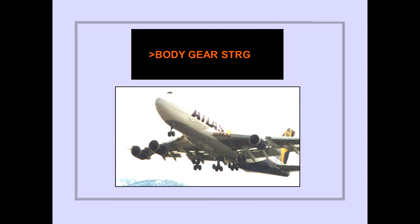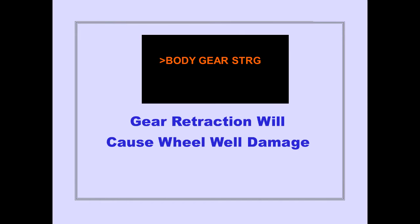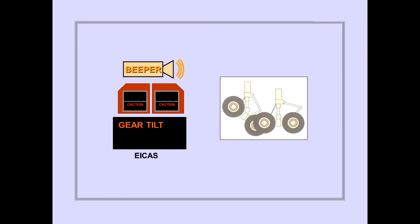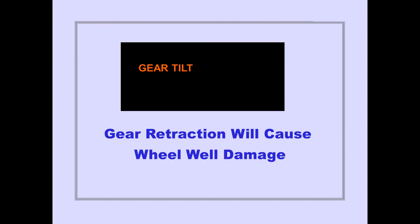The ICAS advisory message 'body gear steering' is displayed after takeoff when the body gear are not centered. When the body gear are not centered, gear retraction will cause wheel well damage. The ICAS caution message 'gear tilt' is displayed after takeoff when one or more wing or body gear are not tilted. When a wing or body gear is not tilted, gear retraction will cause wheel well damage.